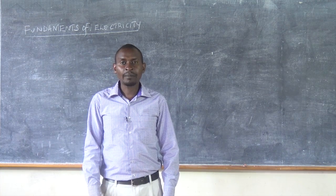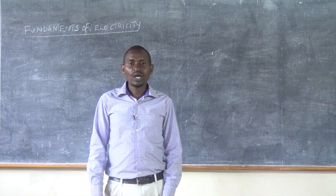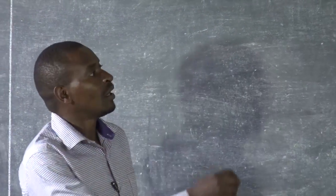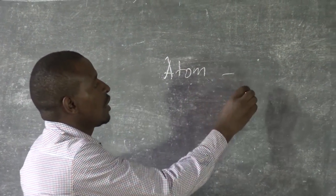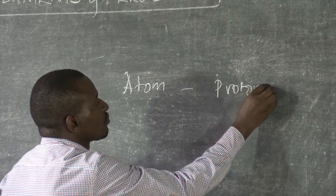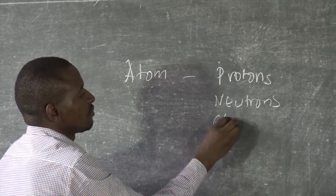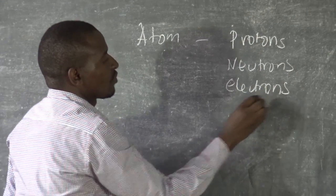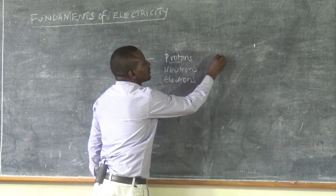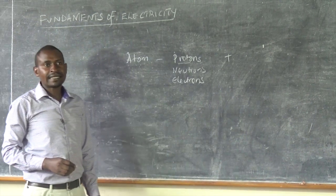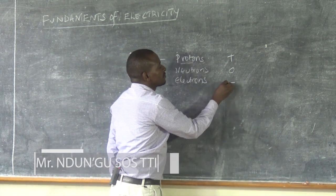In an atom, we have three basic particles. We have the electrons, we have the protons, and we have the neutrons. Protons are particles that are positively charged — they have a positive charge. Neutrons have zero charge, and electrons have a negative charge.